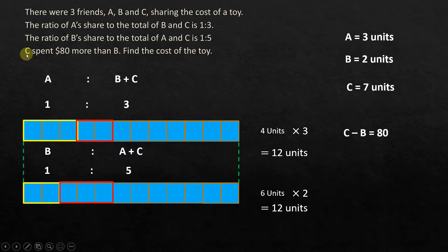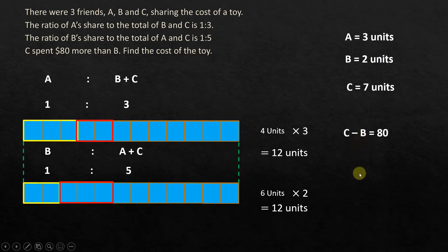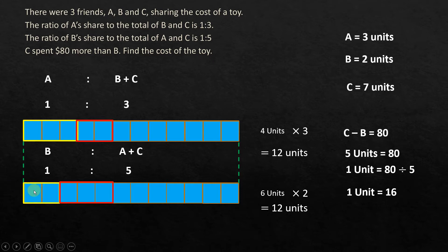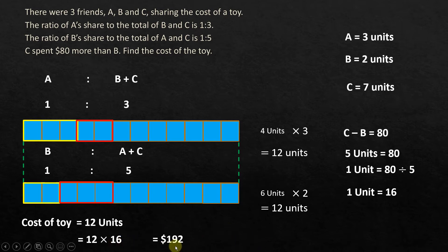C spent $80 more than B, which means C minus B should equal $80. In terms of units, C is 7 and B is 2, so 7 minus 2 equals 5 units, and 5 units = $80. Therefore 1 unit equals $80 ÷ 5 = $16. The cost of the toy is represented by all 12 units altogether, so the cost of the toy equals 12 × $16 = $192.